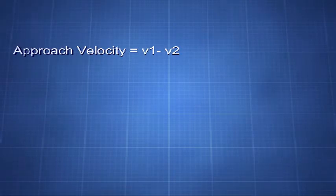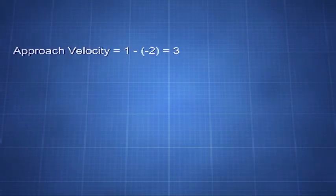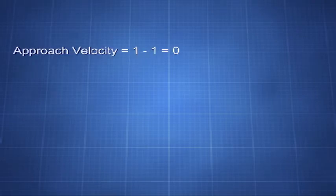Or for example approach velocity equals 1 minus minus 1. Remember that when both quantities have the same sign, it is a plus sign. In this logical way the equation should work no matter what the numbers are, because we are taking into account the facts of reality. So if for example v1 is 1 and v2 is minus 2, the approach velocity equals 1 minus minus 2 equals 3, or if v1 is 1 and v2 is 1, then the approach velocity equals 1 minus 1 equals 0.